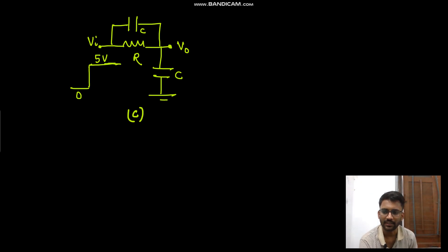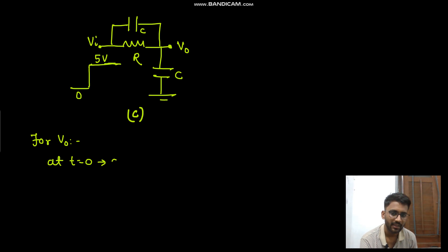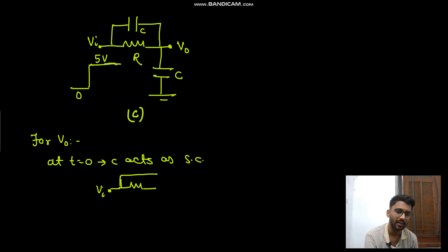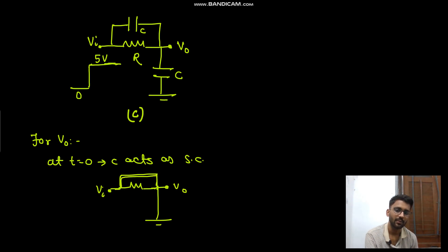We will analyze this circuit. First, talking about V0: at t equals zero, the capacitor acts as a short circuit. So this capacitor will be short circuited and this upper capacitor will also be short circuited. We have Vin, resistance R, and both capacitors short circuited. The complete circuit is short circuited.